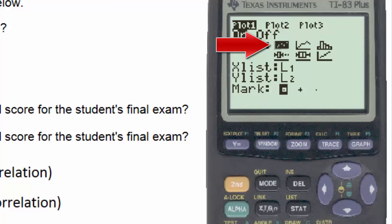The x list is L1, and the y list is L2, and the mark is the little square, which will be used to mark the data points given in the table.